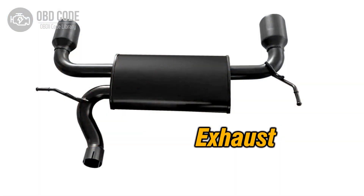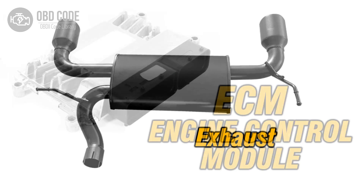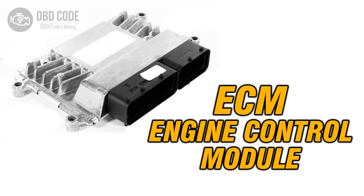3. Check the exhaust system for any obstructions or leaks that may affect pressure readings. Clear obstructions and repair leaks as needed. 4. Verify the operation of the ECM and consider reprogramming or replacing it if other potential causes have been addressed but the issue persists.